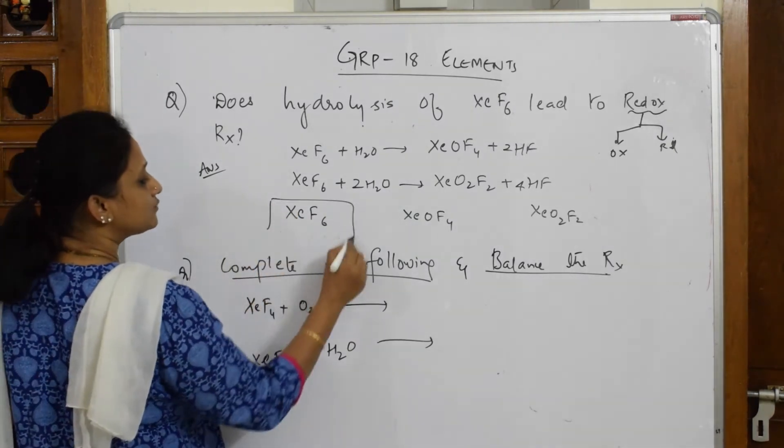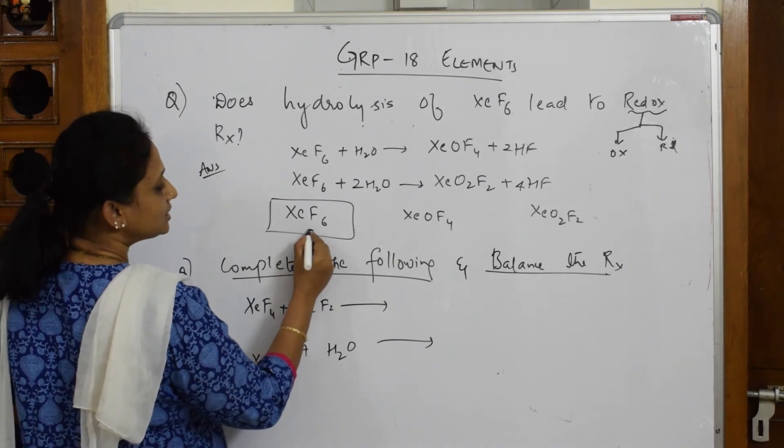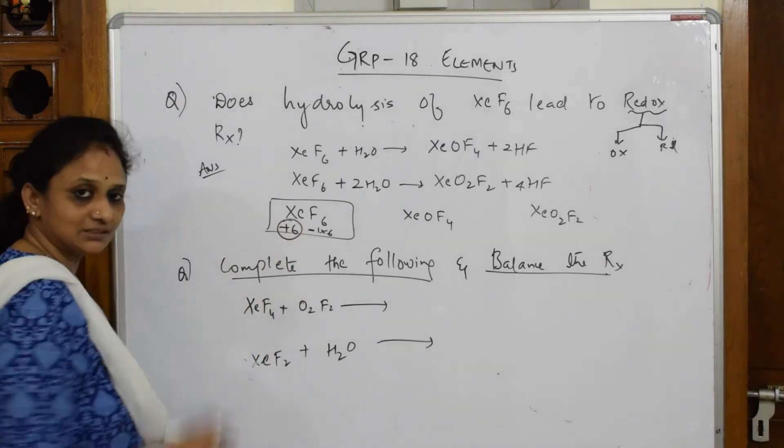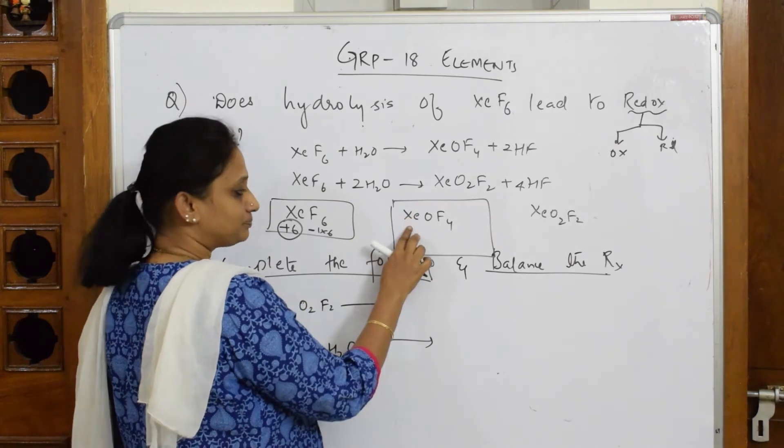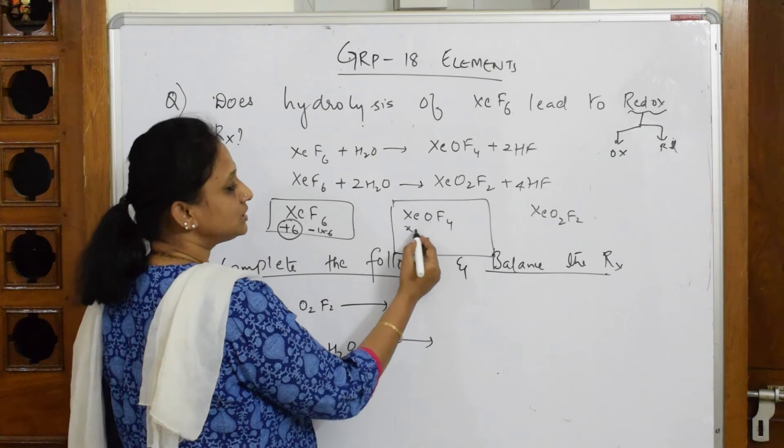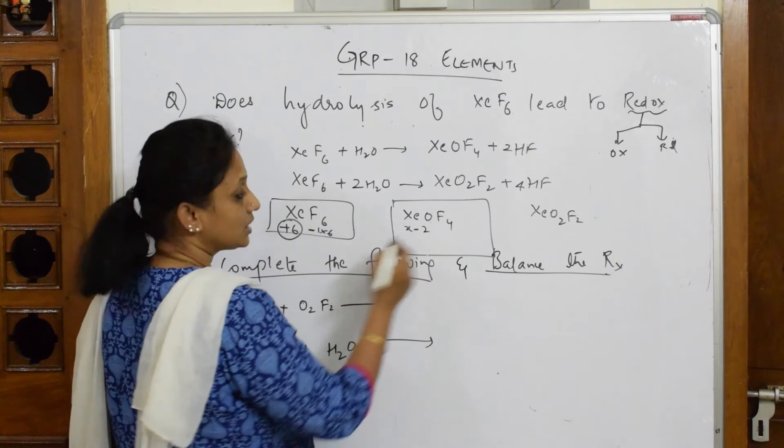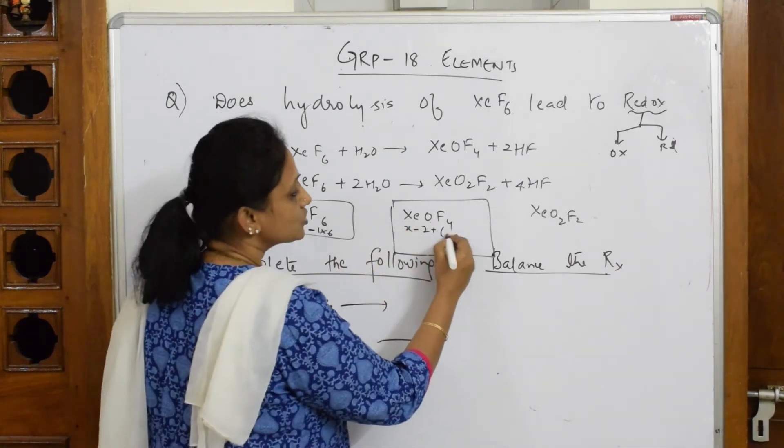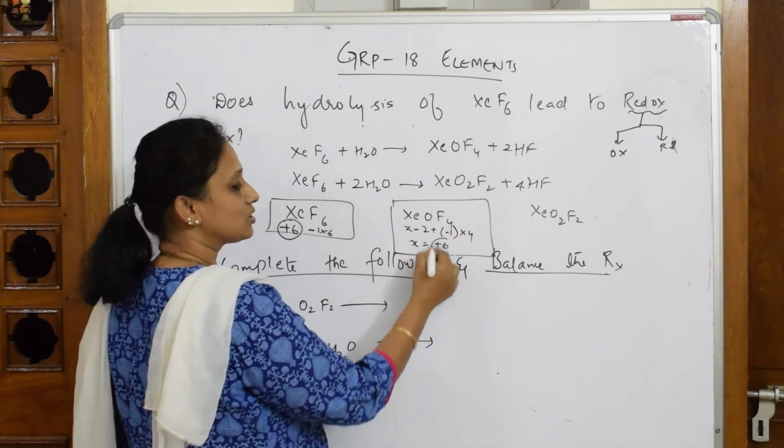In this particular compound, when I have to see for xenon, this is 6, isn't it? Fluorine is minus 1 into 6. So xenon oxidation state is plus 6. Now let's compare here. In this particular case, when I calculate the oxidation state of xenon, let this be X. Oxygen here, if I take valency of oxygen as minus 2, plus fluorine valency is minus 1 into 4. So X is equal to plus 6. Here also it is plus 6.